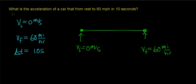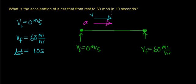The velocity of the car is going to be in this direction, so I'm going to draw a velocity vector. The car is going to be accelerating in the same direction in which its velocity is changing, so in this case the car is going to be speeding up.